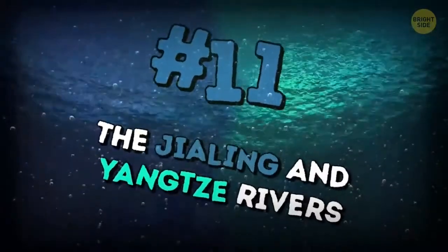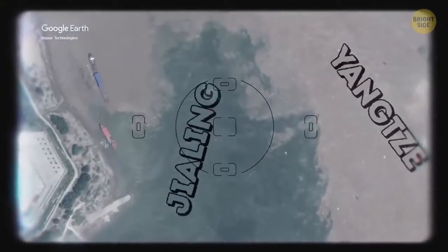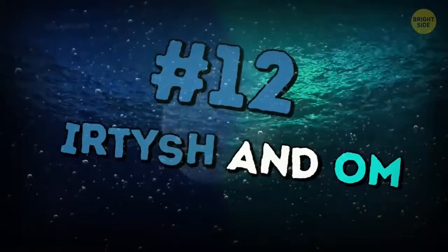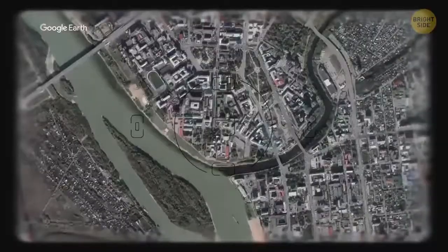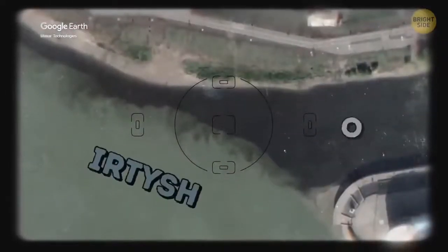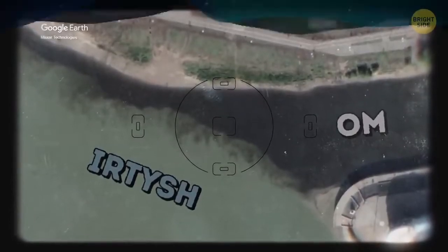The Jialing and Yangtze rivers meet in Chongqing, China. The Jialing is clean and the Yangtze is brown. Irtysh and Om. These two rivers flow into each other in Omsk, Russia. The Irtysh is cloudy and the Om, pure and transparent.